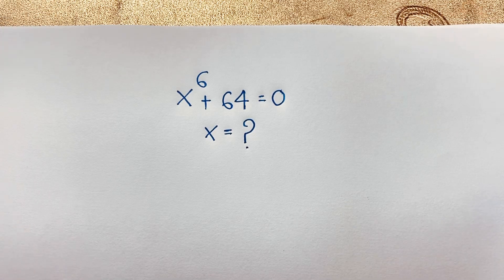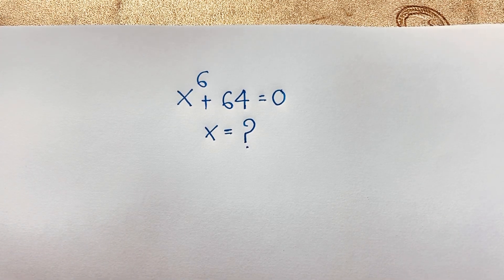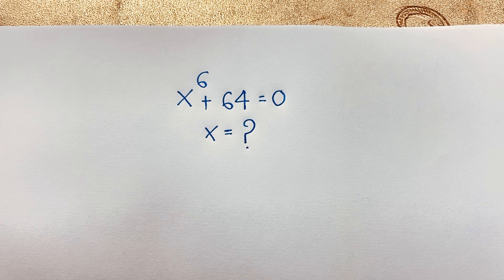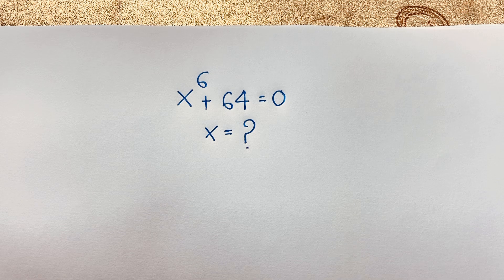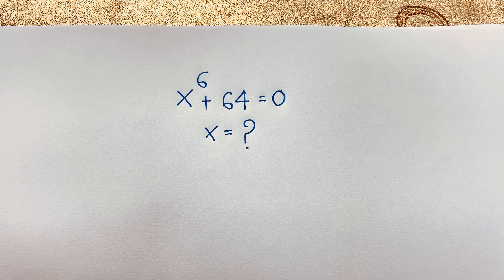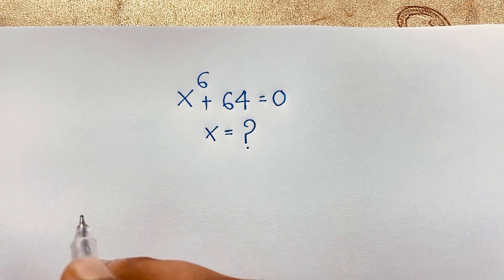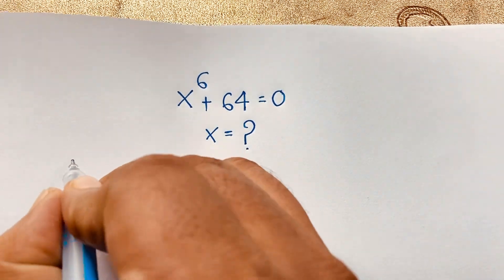Hello everyone, welcome to Russia's classroom. Today we'll solve an interesting exponential math Olympiad question, which is x to the power 6 plus 64 is equal to 0. x is equal to what? How to solve this interesting exponential math problem? We'll find out — there are 6 roots, I mean 6 solutions. So let's start the solution.